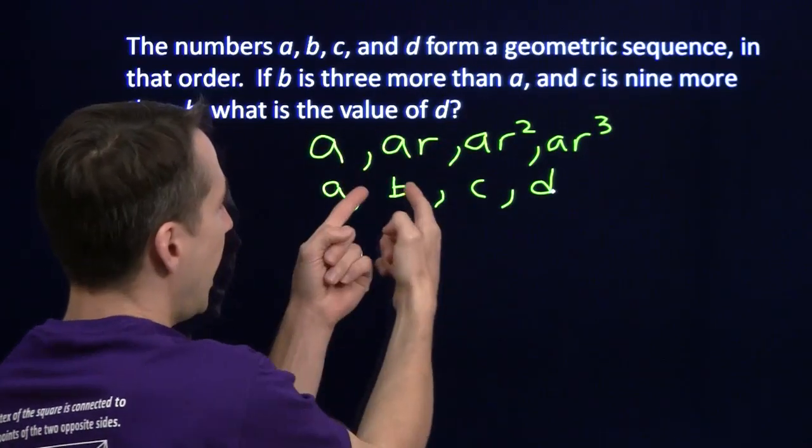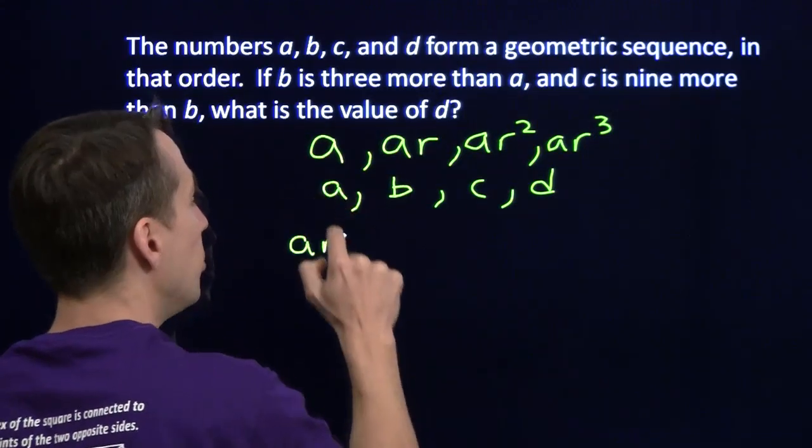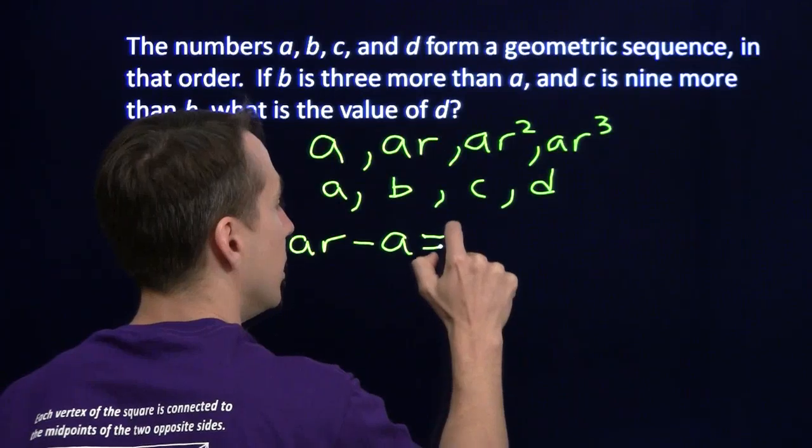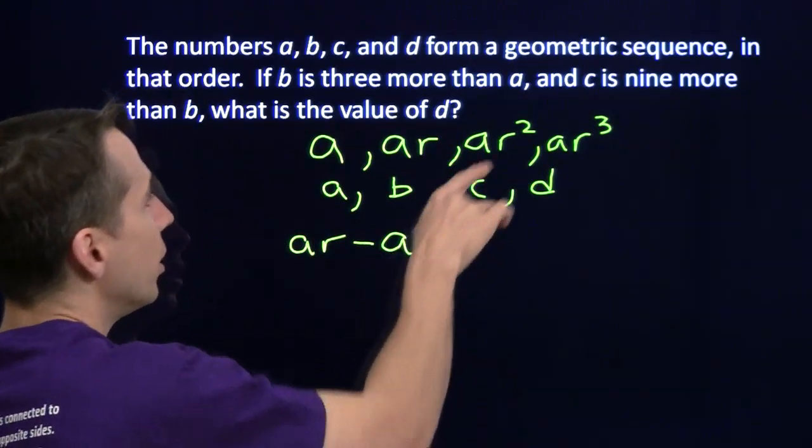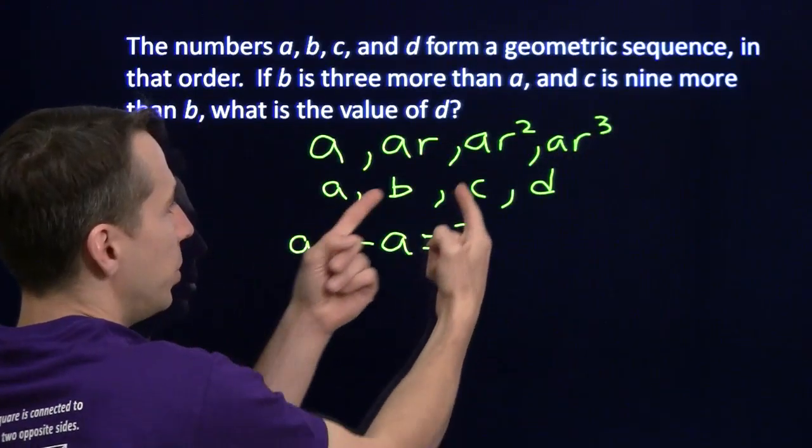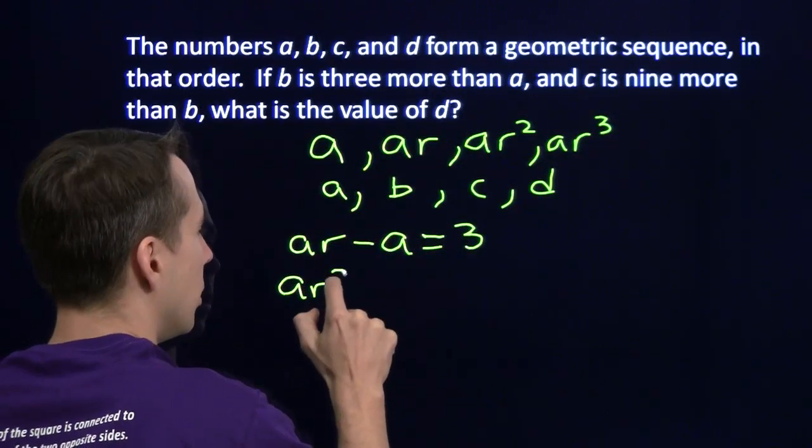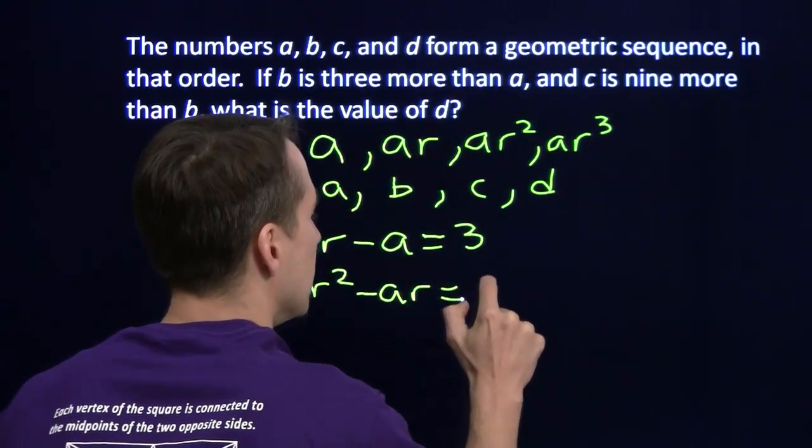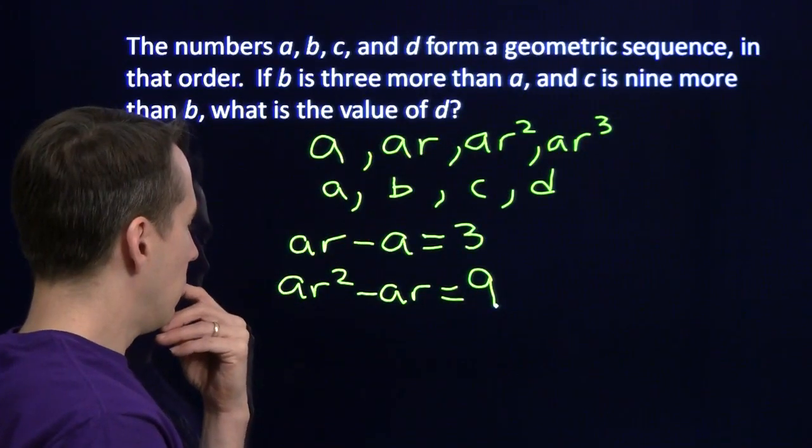B is three more than A. AR is B. And it's three more than A. So AR minus A is three. Got all my variables on one side, constant on the other. C is nine more than B. AR squared is C. AR is B. C is nine more than B.